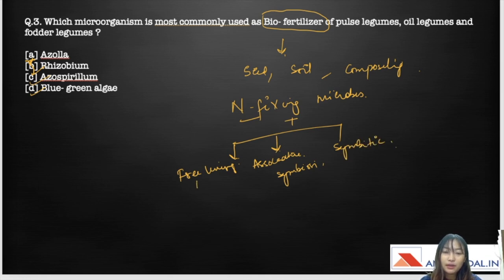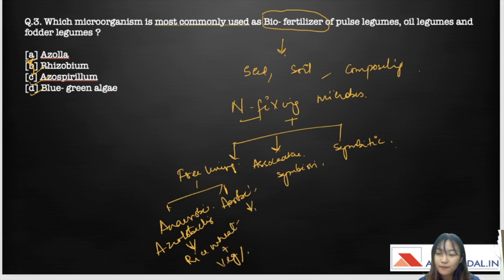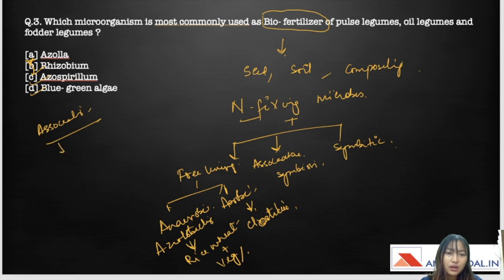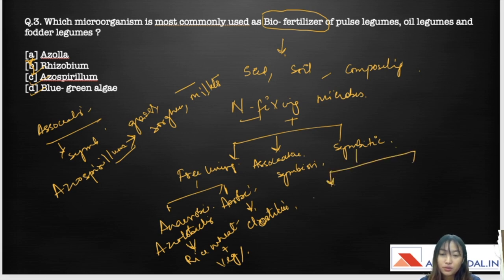Free-living nitrogen fixers can be anaerobic — the example being Azotobacter, which creates a symbiotic relationship with rice, wheat, and some vegetables — or aerobic, such as Clostridium. Under associative symbiosis, we have Azospirillum, which has a symbiotic relationship mostly with grasses, sorghum, and pearl millet. The symbiotic category can be further divided into those that form nodules and those without nodules.